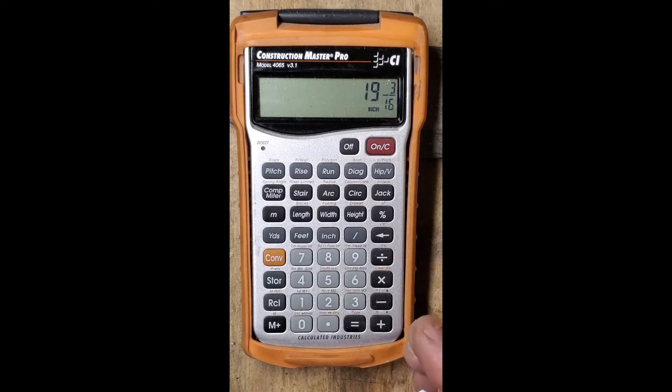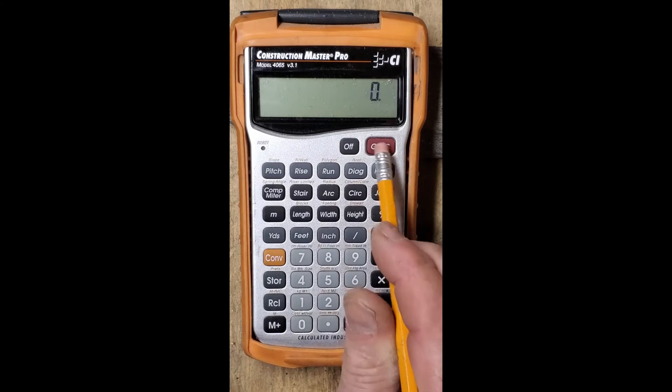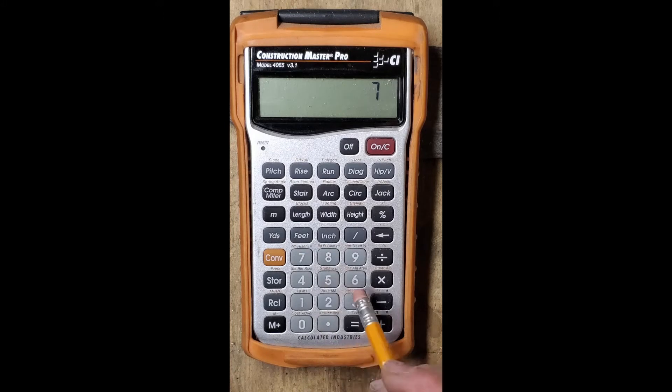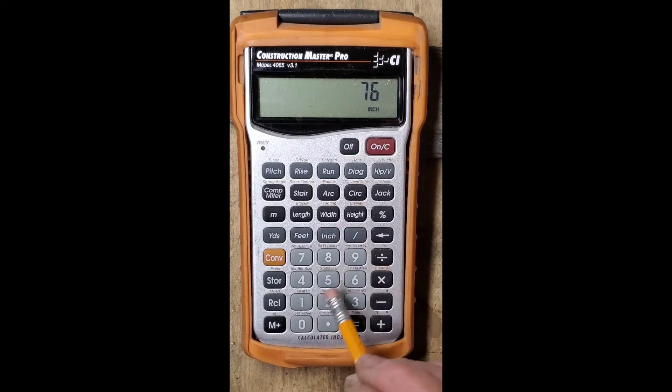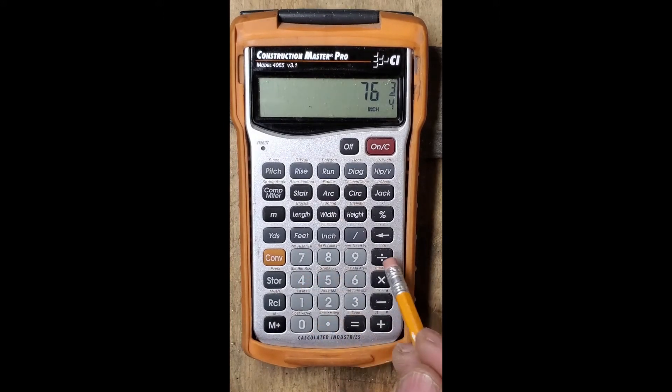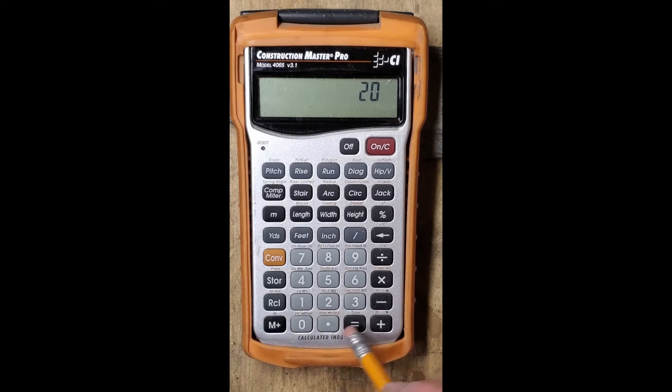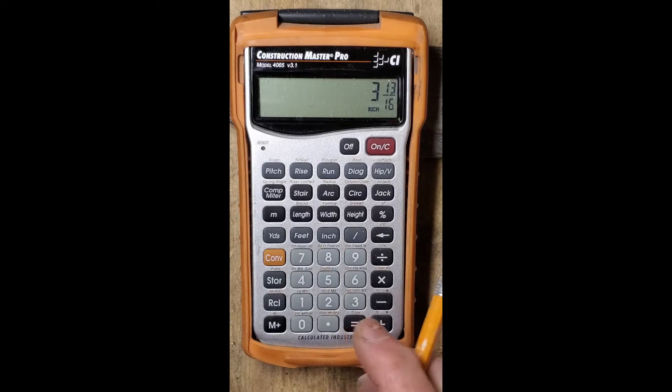So we're going to clear and divide 76 inch 3 quarter divided by 20 equals 3 and 13 sixteenths. So that's going to be our segments.